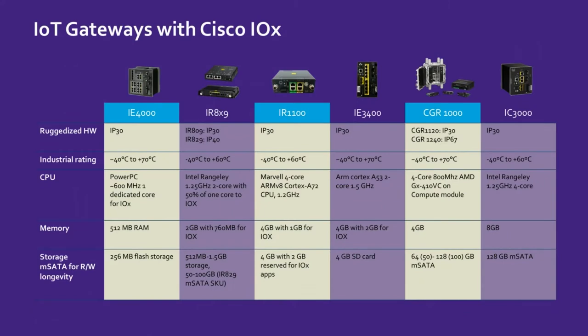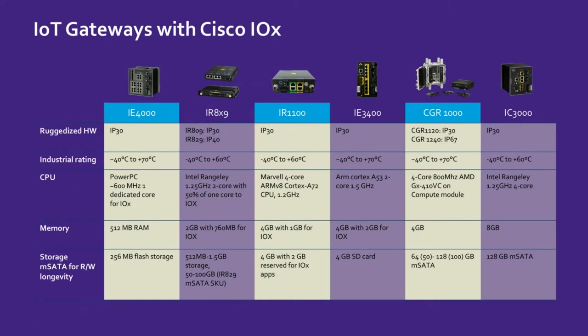In terms of gateways, we have a number of IoT gateways. We have two routers — the IR829 and the IR1101 — that can be installed in ruggedized environments and support LTE connectivity, as well as Wi-Fi. For switches, we have the IE4000 and the IE3400. Note that IOX support on the IE4000 has been end-of-lifed, so you should move to the IE3400, which is newer, faster, more efficient, and powered by ARM. We also have the CGR1000, specifically targeted toward grid substations and electricity distribution.